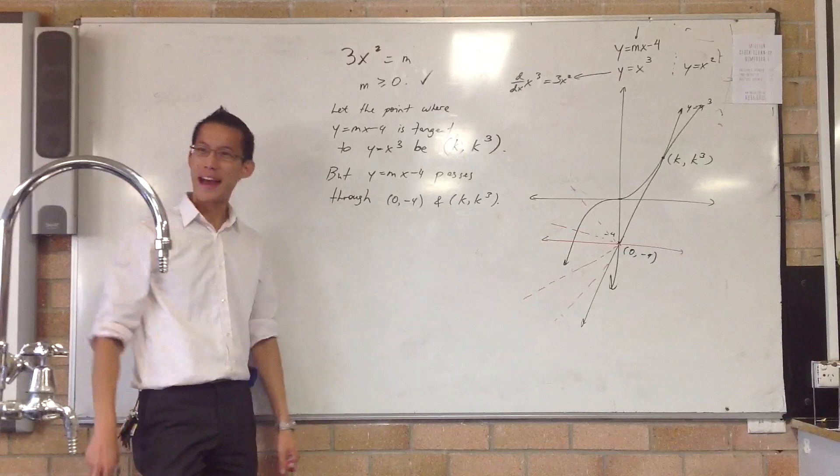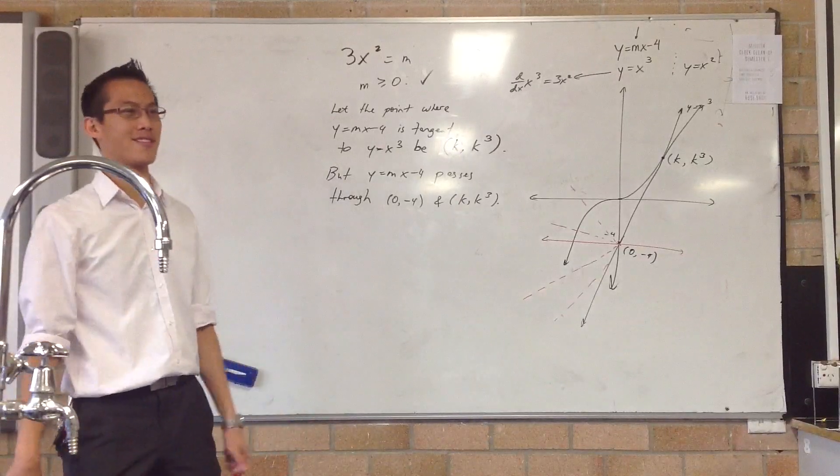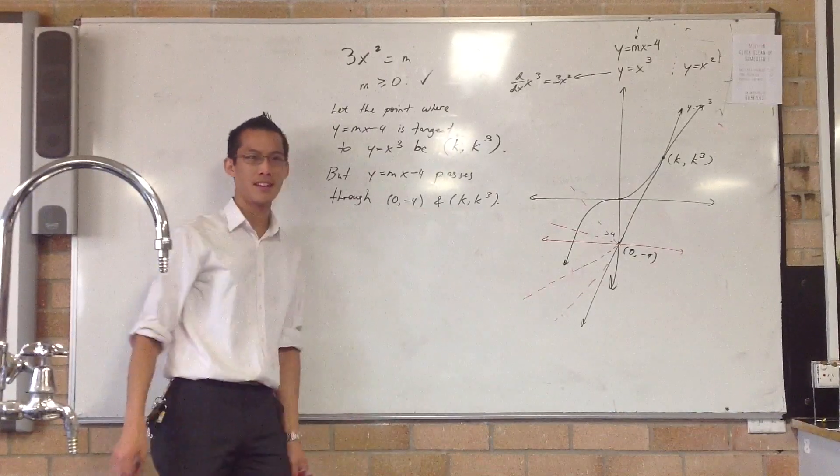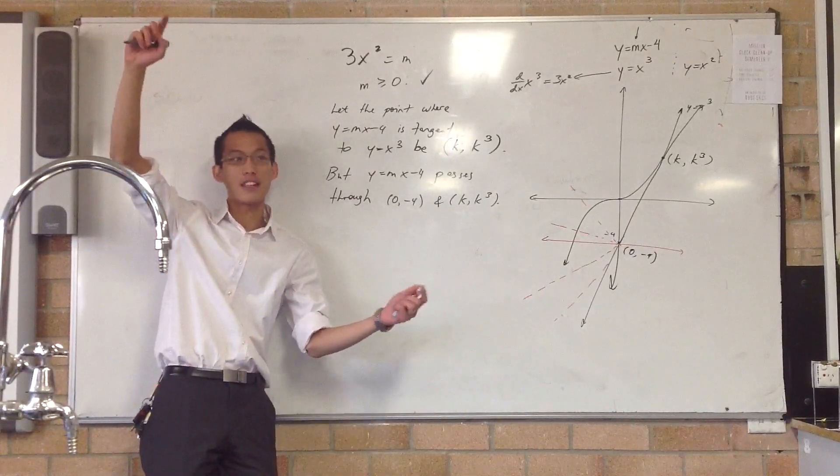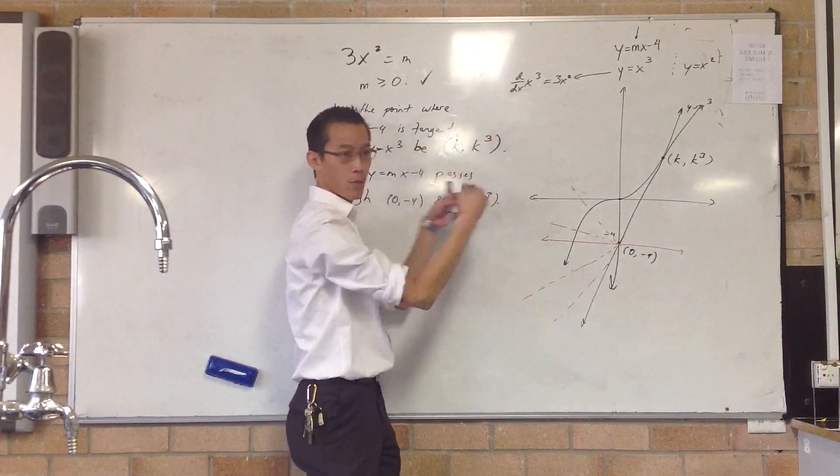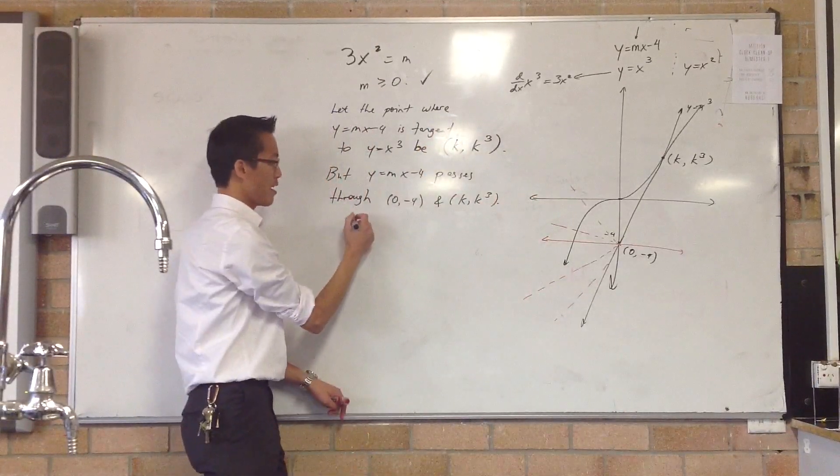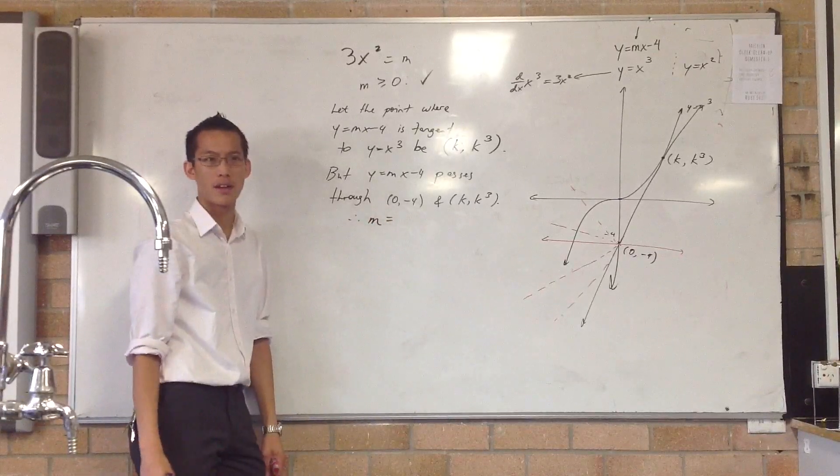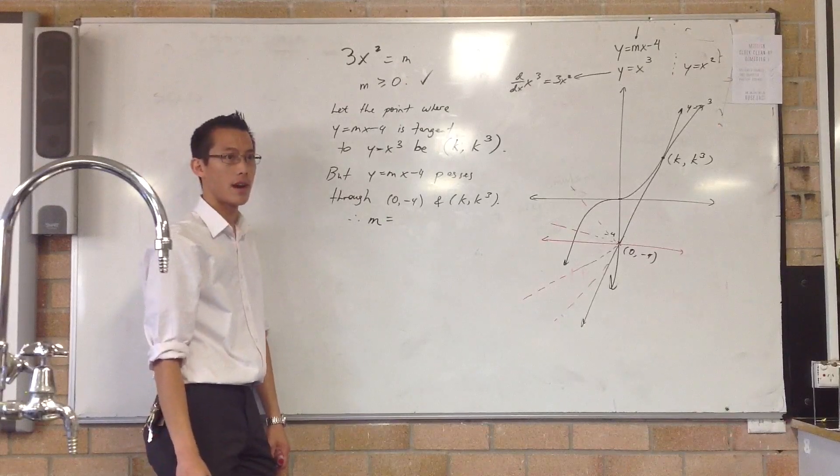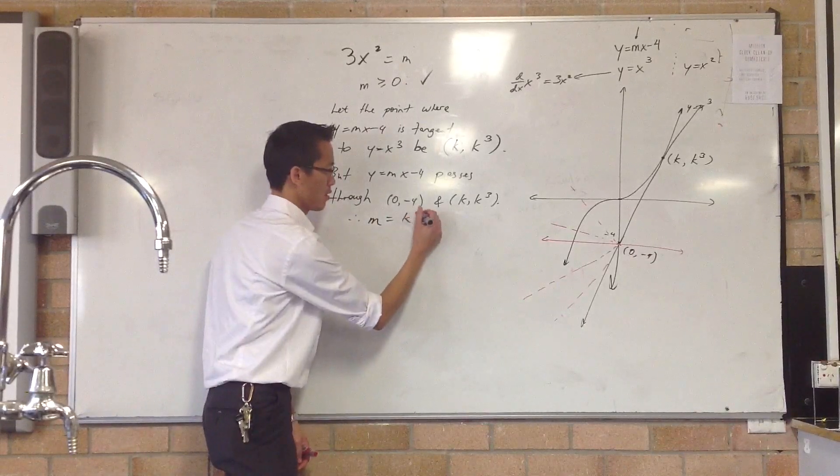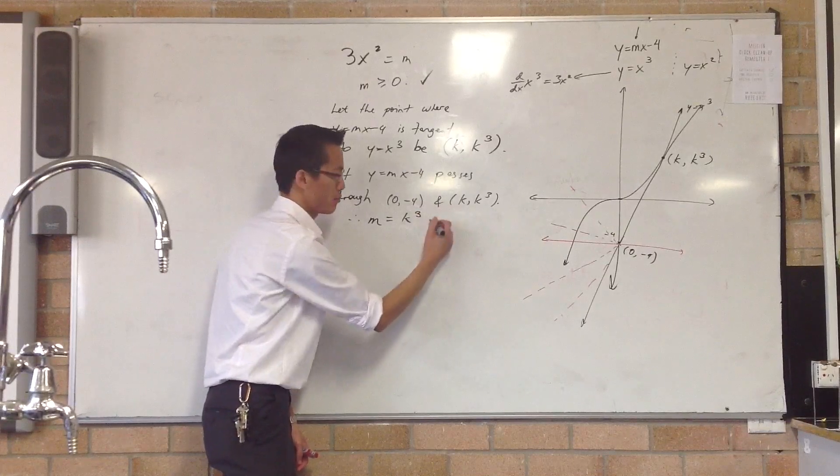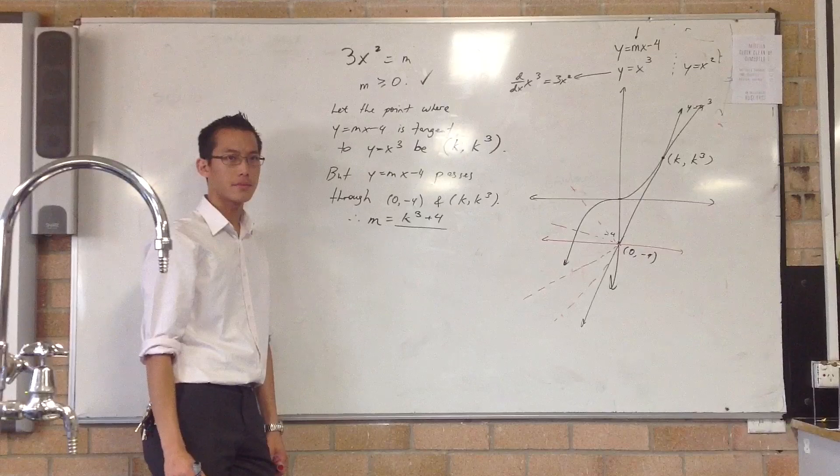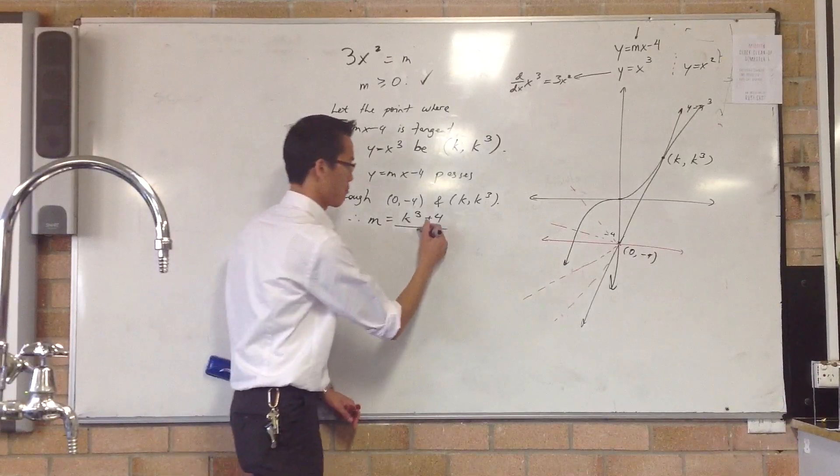I'm actually going to go backwards a little bit. Back in year 8, when we were first doing point geometry, right? How do you figure out the gradient of something? Well, you need to know two points that join, and then you can work out the gradient of the interval, right? It's rise over run. So, therefore, I can say, m should be equal to, alright, what is rise over run in this case? Rise, k cubed, minus negative 4, so, plus 4, all over k minus 0.